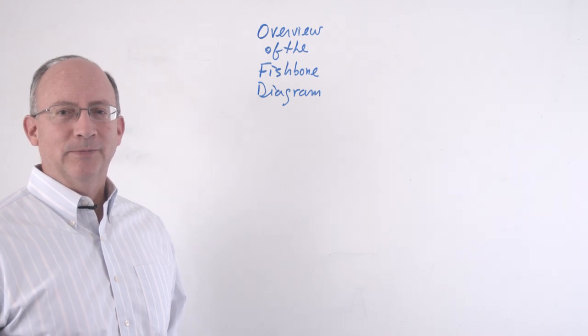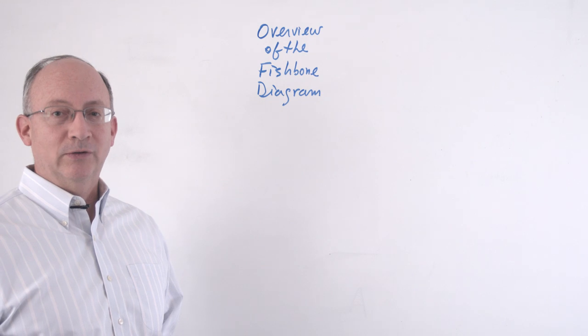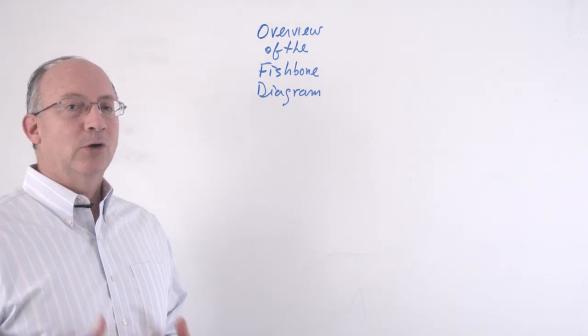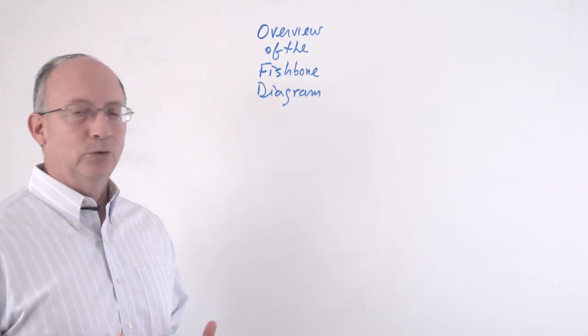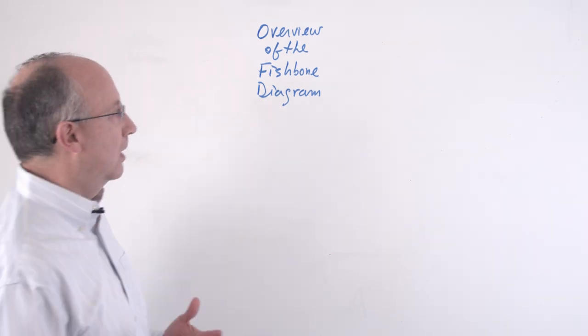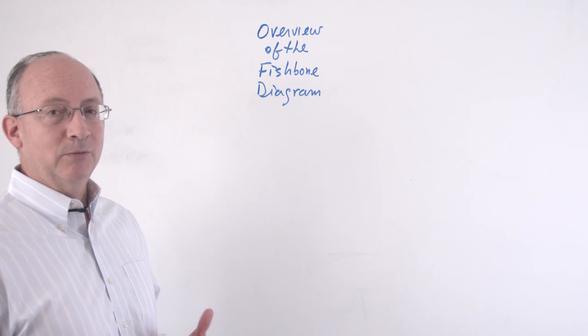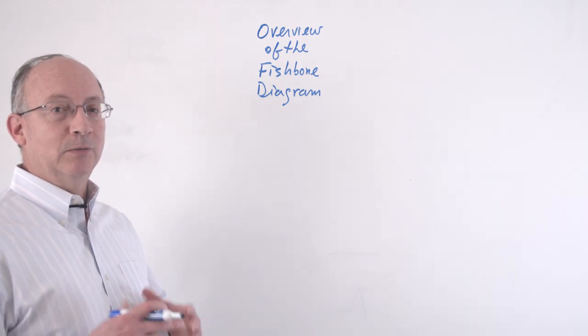Let's have an overview of it. The Fishbone diagram is also known as the Ishikawa diagram or the cause-effect diagram, and the term cause-effect tells us about its purpose. It is best understood when we think about the fact that the Fishbone diagram really seeks to explain a system of causes.